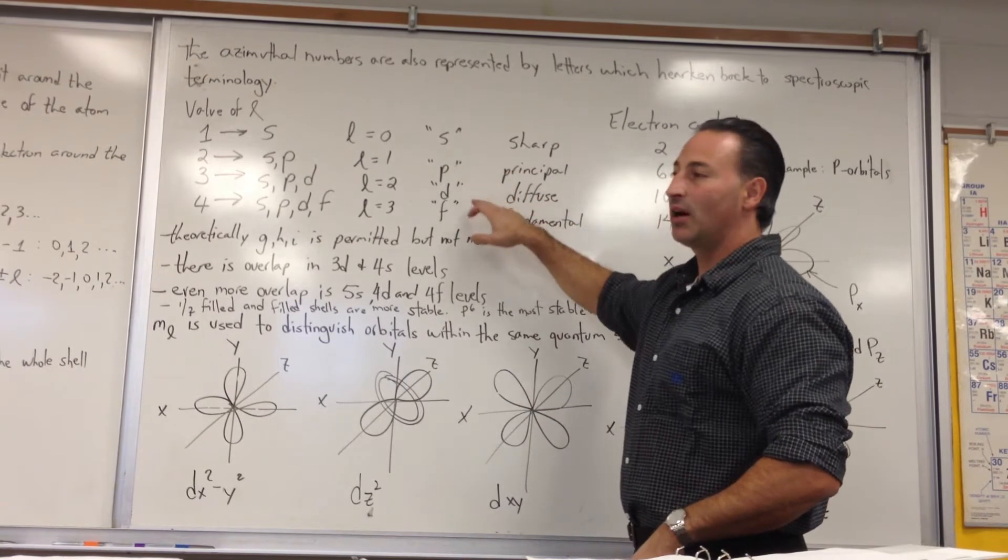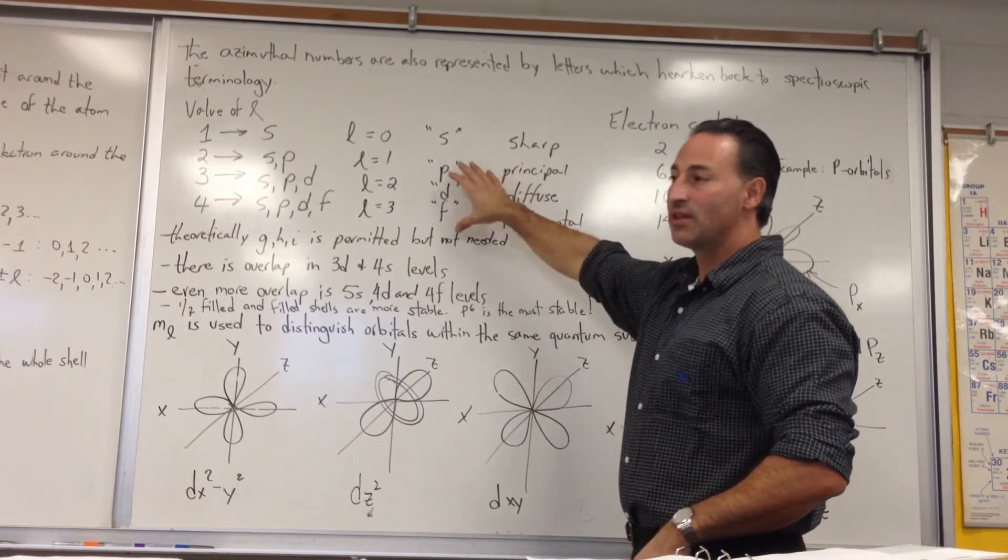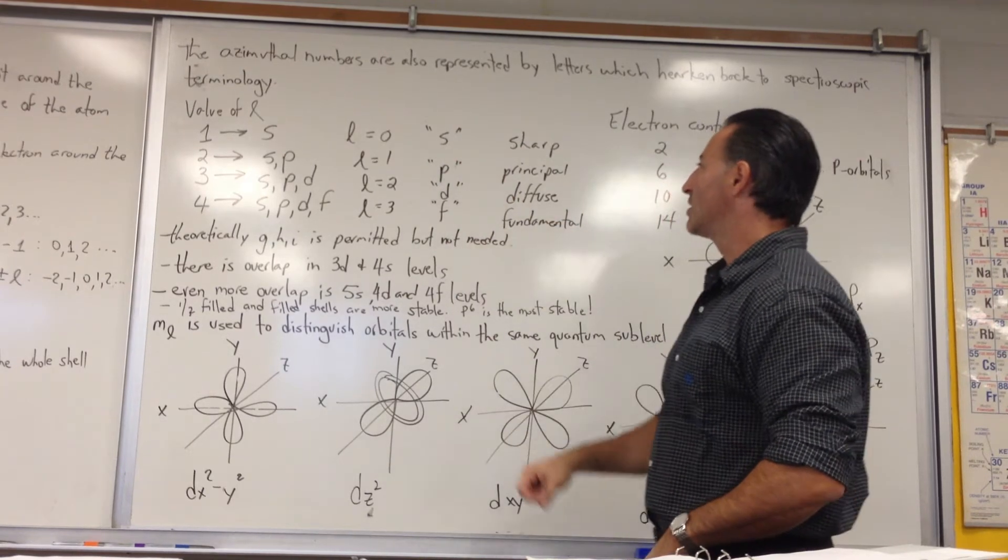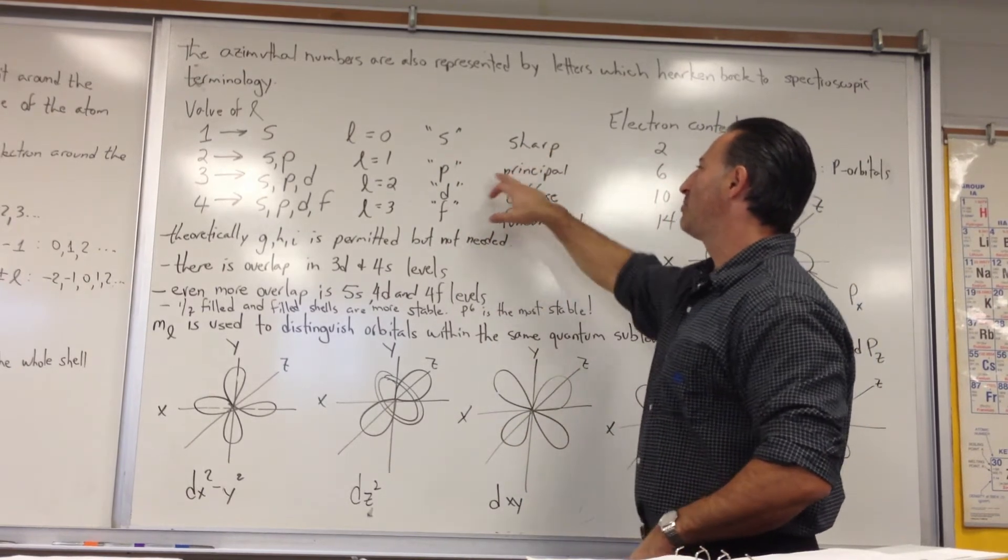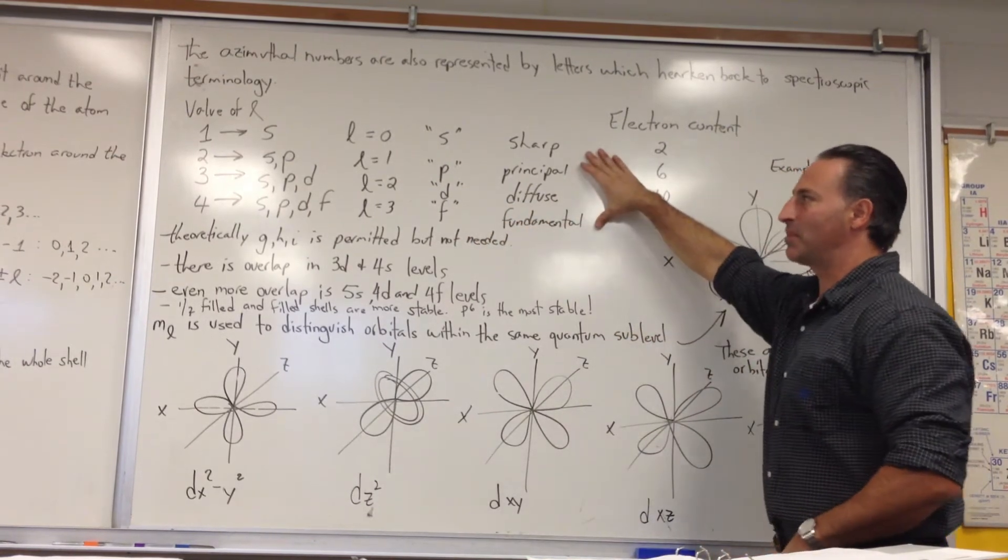There's S block, P block, D block, and F block. We see that the periodic table is organized along the lines of these orbital considerations. S used to stand for sharp, P for principal, D for diffuse, and F for fundamental. So these are all spectroscopic terms.